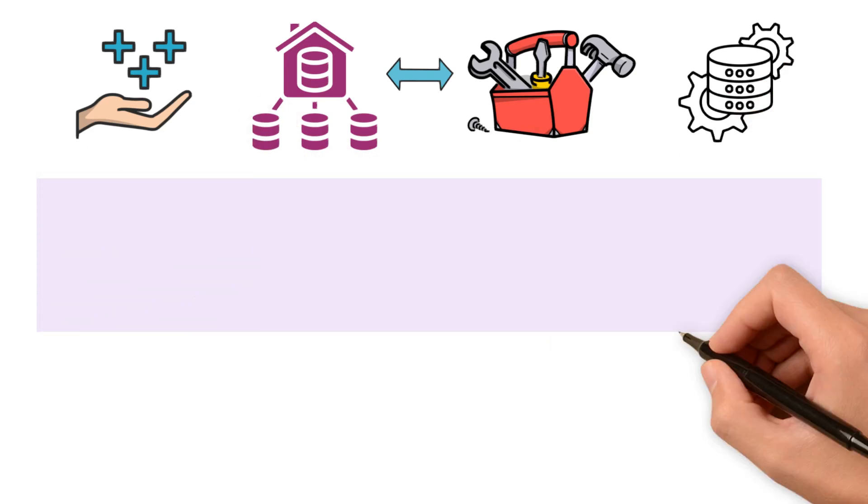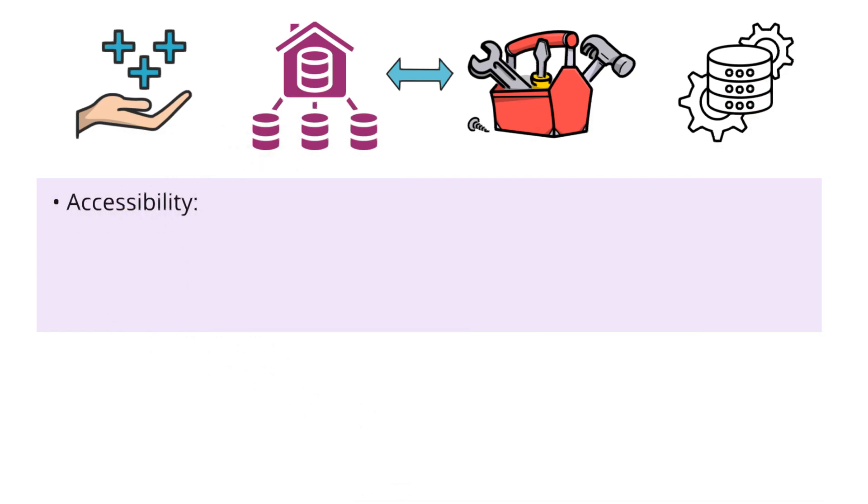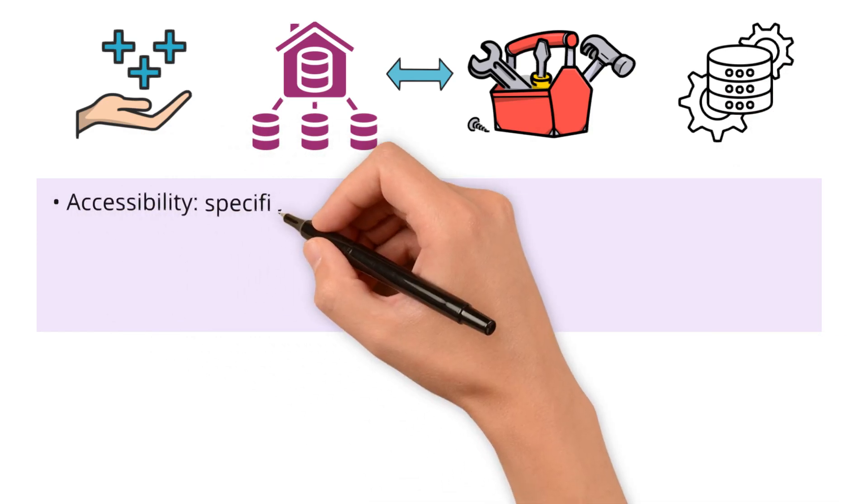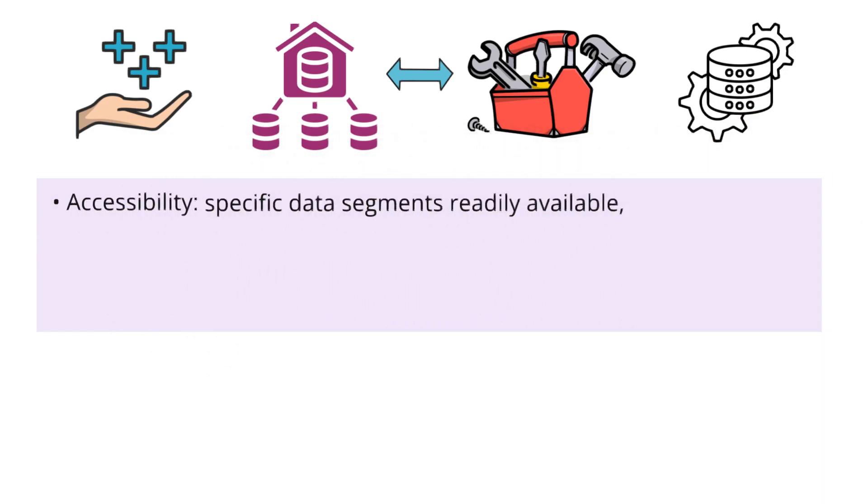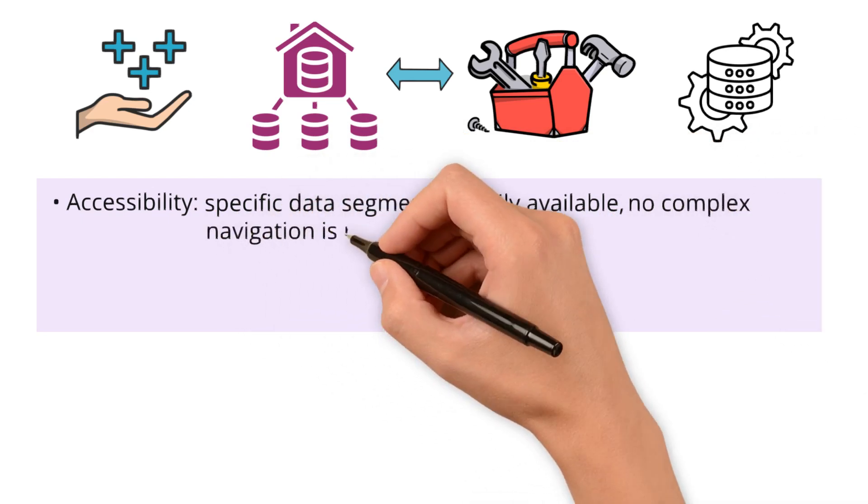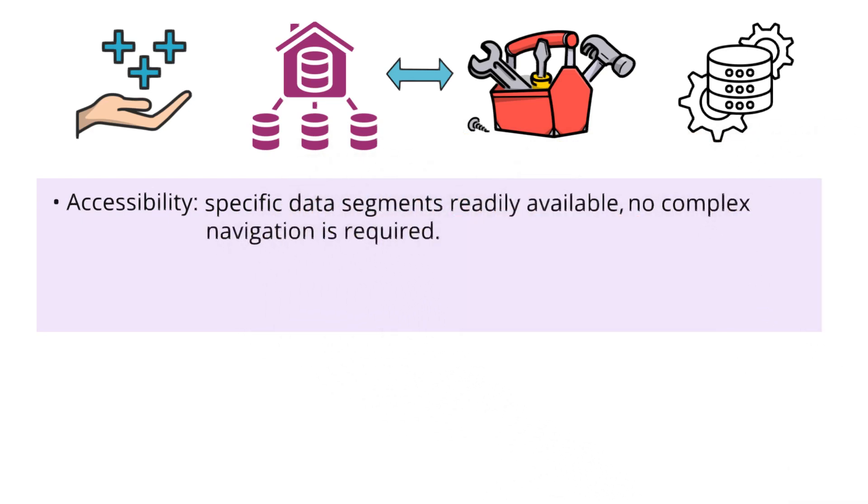Here are some game changers. Accessibility. Data marts make specific data segments readily available and no complex navigation is required. Next, agility. They enable swift insights, helping you to find those aha moments faster.